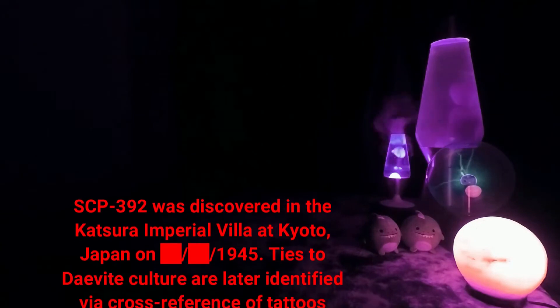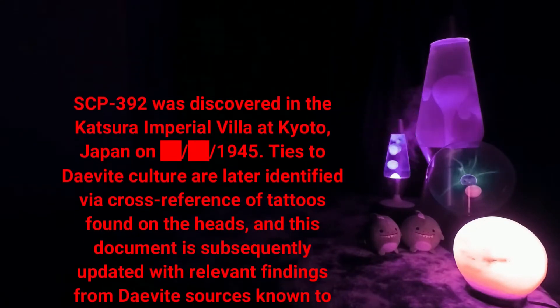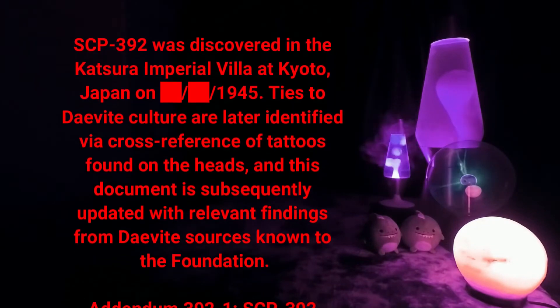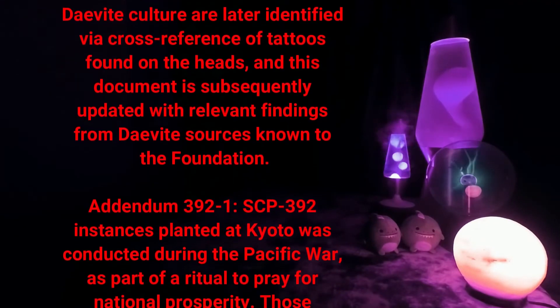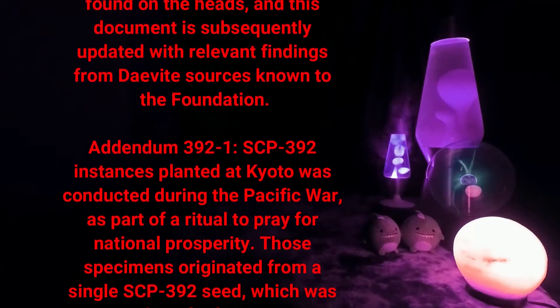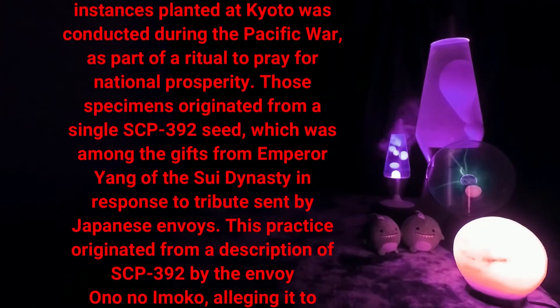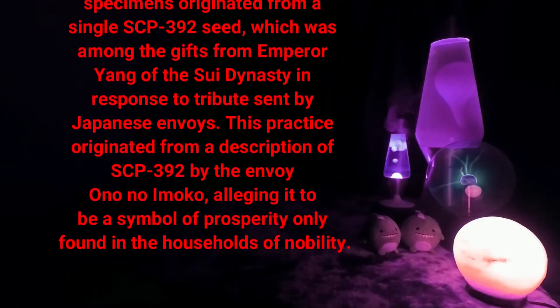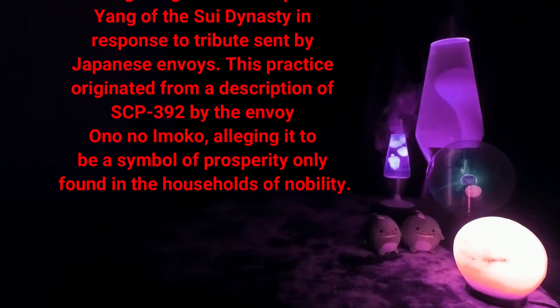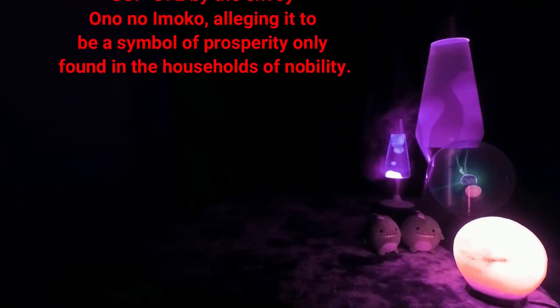SCP-392 was discovered in the Katsura Imperial Villa at Kyoto, Japan, on [DATA EXPUNGED]/1945. Ties to D-Vite culture were later identified via cross-reference of tattoos found on the heads, and this document was subsequently updated with relevant findings from D-Vite sources known to the Foundation. Addendum 392-1: SCP-392 instances planted at Kyoto were conducted during the Pacific War as part of a ritual to pray for national prosperity. Those specimens originated from a single SCP-392 seed, which was among the gifts from Emperor Yang of the Sui dynasty in response to tributes sent by Japanese envoys. This practice originated from a description of SCP-392 by the envoy Ono no Imoko, alleging it to be a symbol of prosperity only found in the households of nobility.